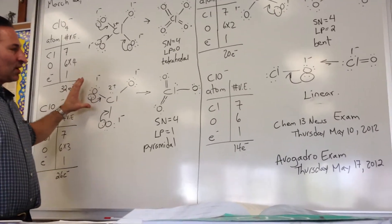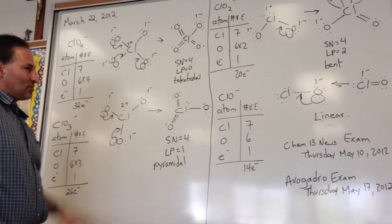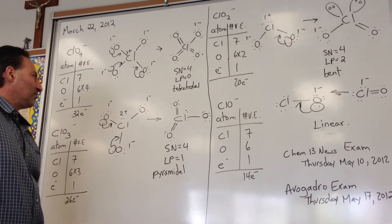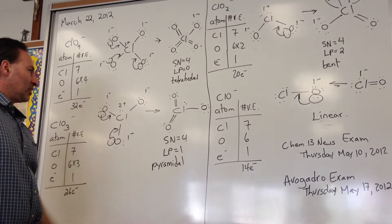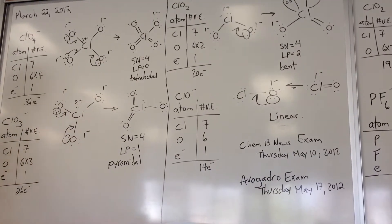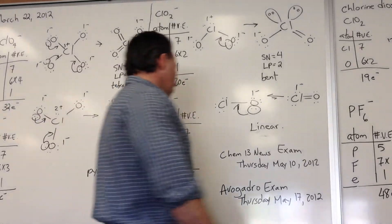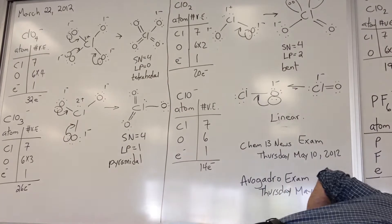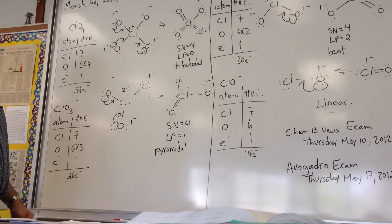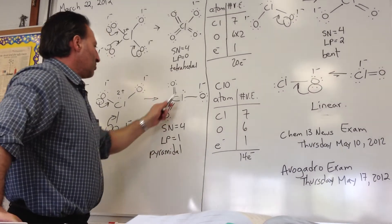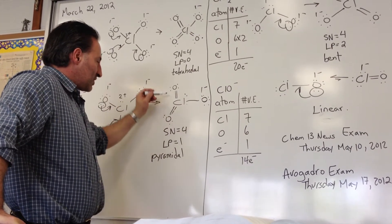If we leave the molecule drawn like that, it represents some of the canonical structures that can occur, though only momentarily. But it makes more sense to reduce the formal charges by moving in lone pairs, because chlorine is able to accommodate expanded octets. When we do that, it leaves a formal charge on one of the oxygen atoms. We also need to have a formal charge of negative 1 on the chlorate anion, and there is a lone pair on chlorine. So the steric number ends up being 4.